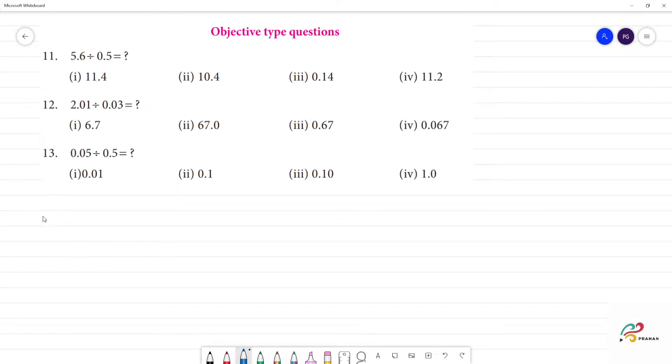Objective type questions. 11th one: 5.6 divided by 0.5. In the numerator, one digit - multiply by 10, multiply by 10. 56 divided by 5.